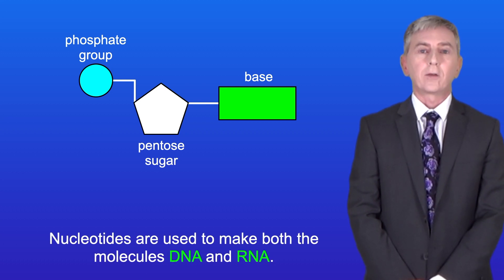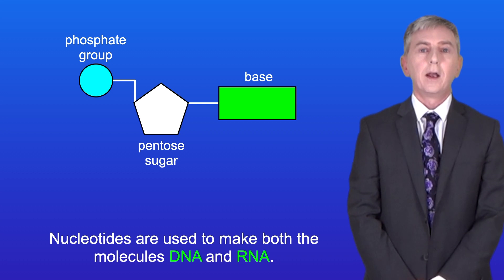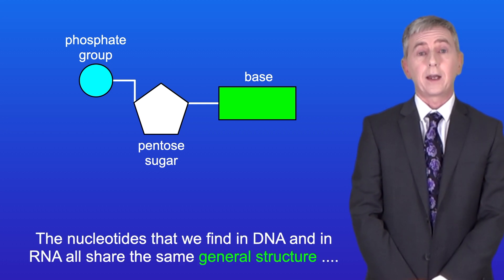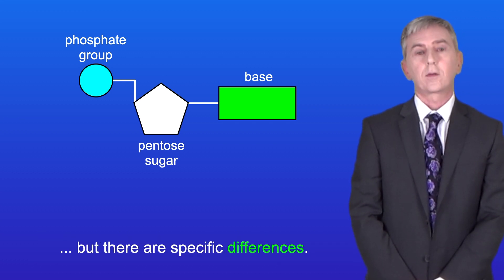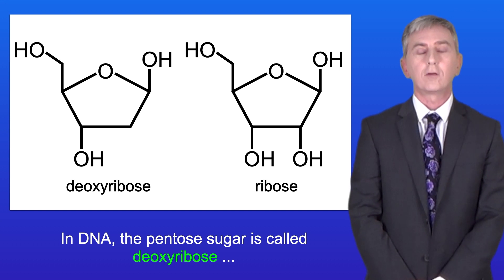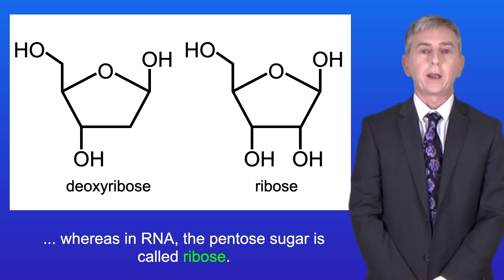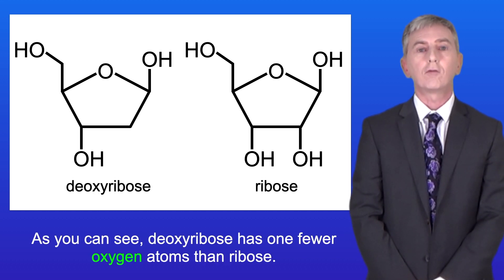Nucleotides are used to make both DNA and RNA, and the nucleotides found in DNA and RNA all share the same general structure, but there are specific differences. In DNA, the pentose sugar is called deoxyribose, whereas in RNA, the pentose sugar is called ribose. Deoxyribose has one fewer oxygen atom than ribose.